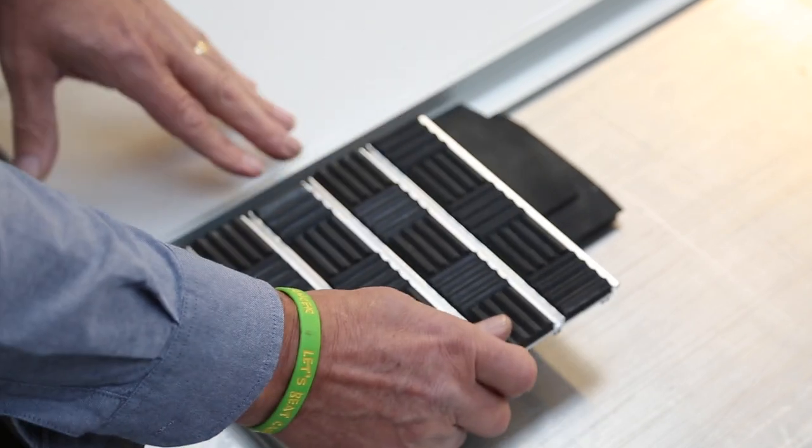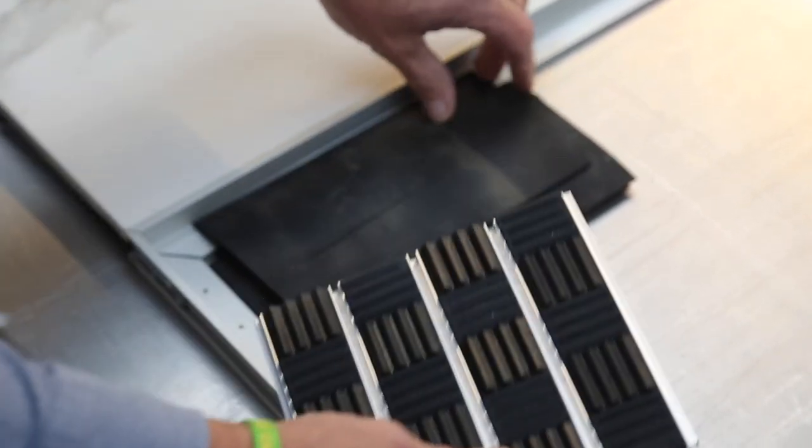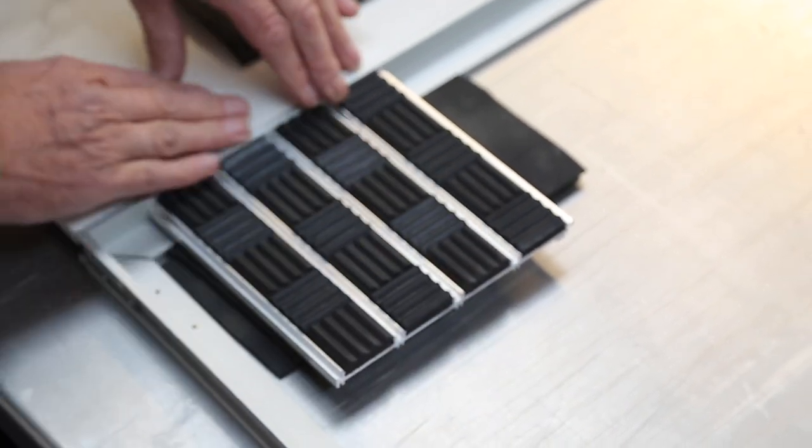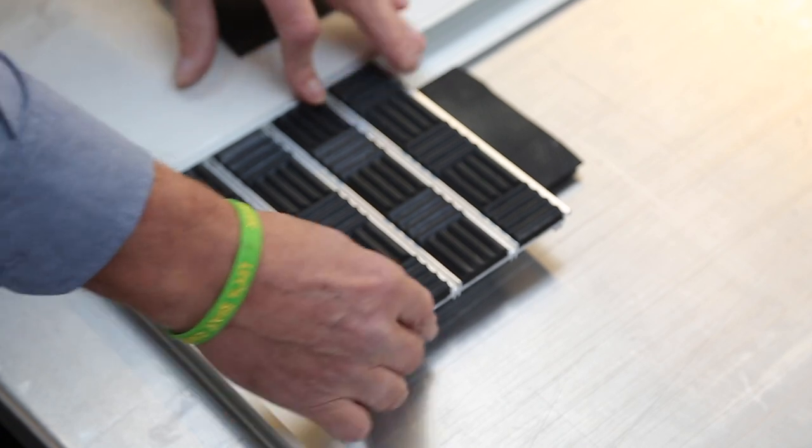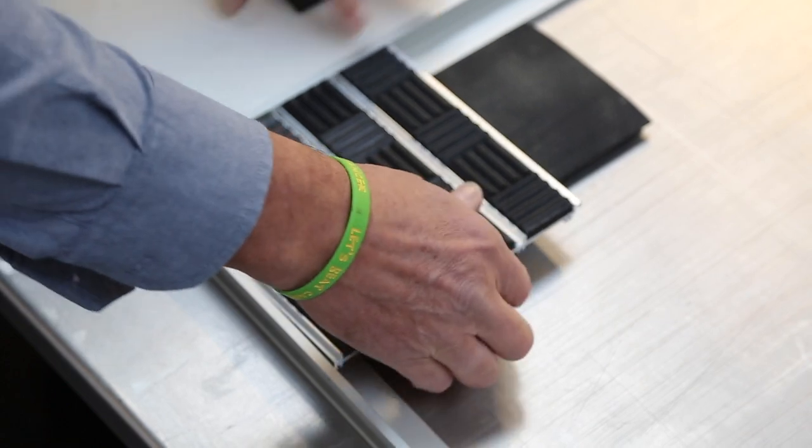You can use this type of product which is a cross track. And again, the screed would be slightly different, but you get the idea whereby this sits inside here like so and is perfectly level again with the existing floor.